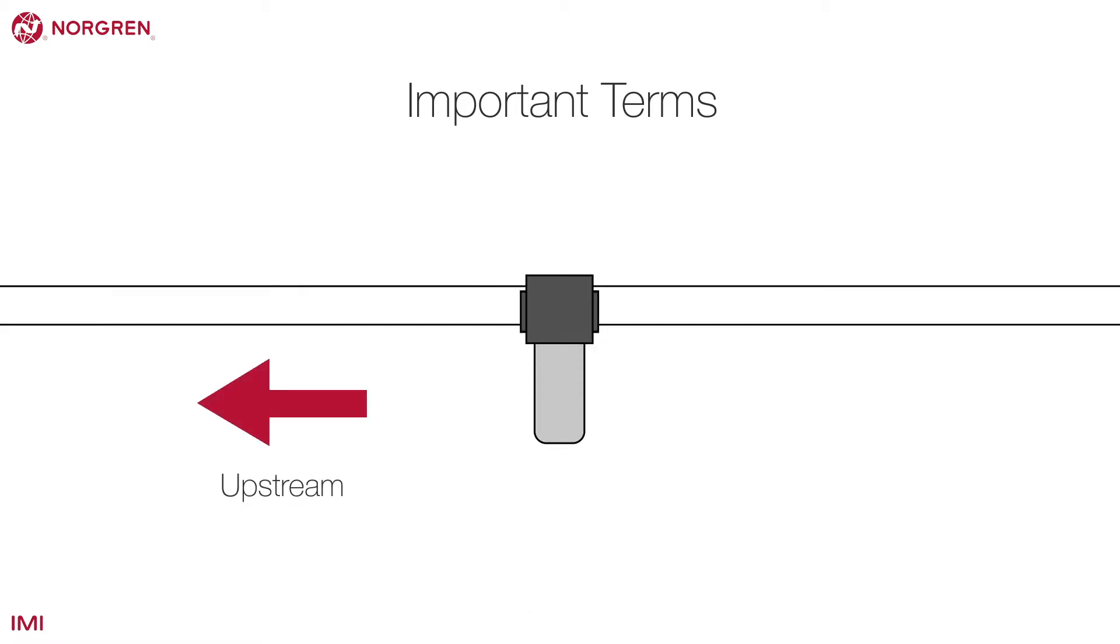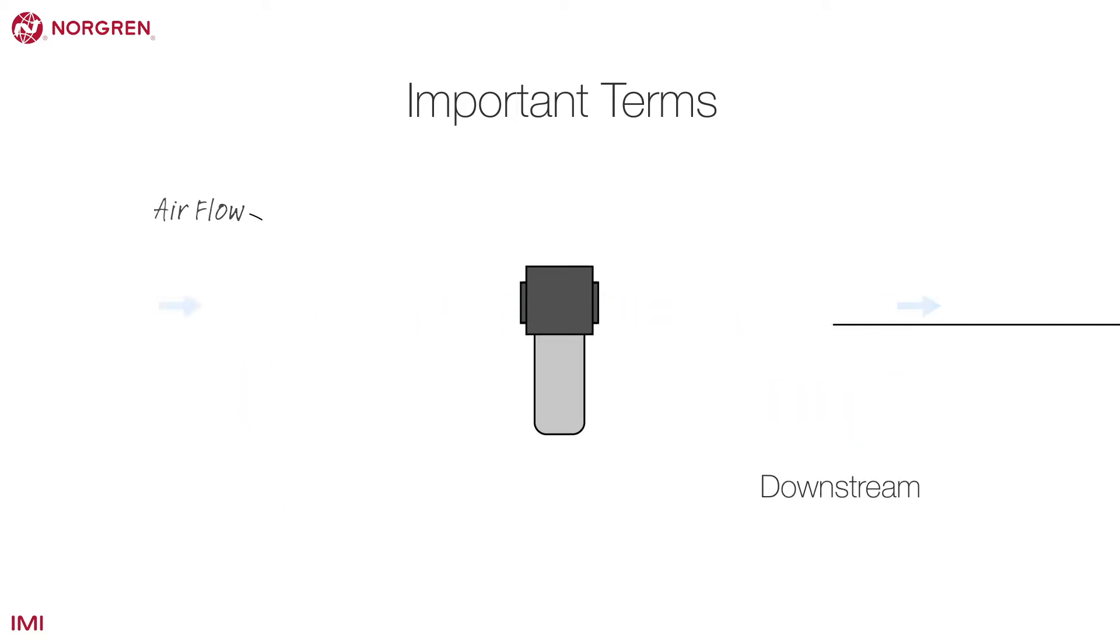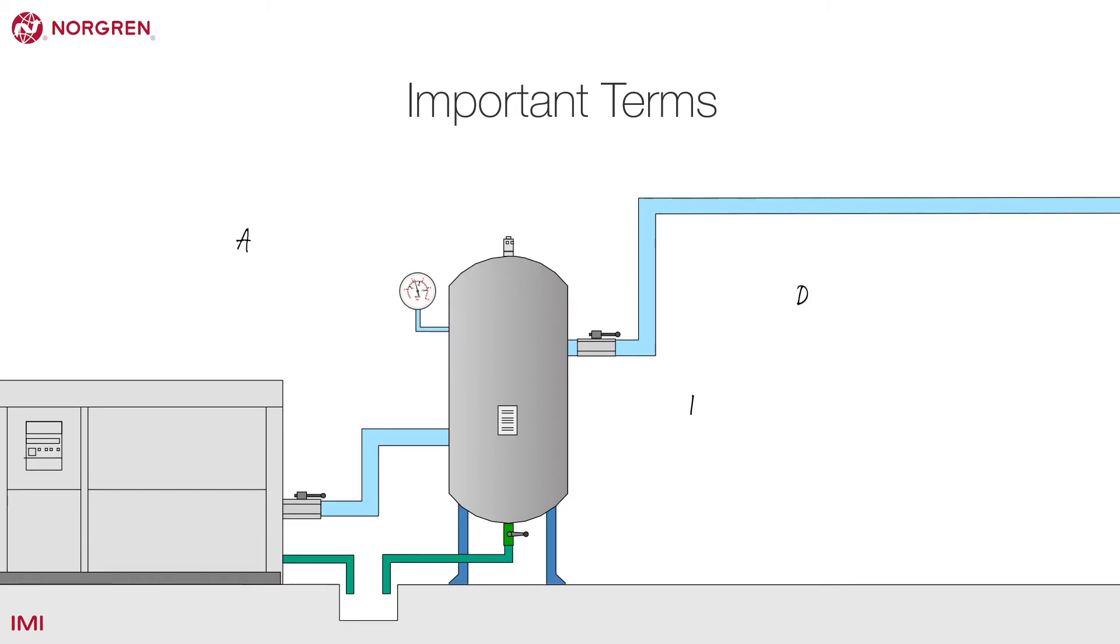Now let's look at some of the terms used here and in other parts of the compressed air world. Upstream refers to anything in a compressed air system before the point you are dealing with. Downstream is after. You can see from this example the air receiver is upstream of the isolating valve and the distribution pipe is downstream.